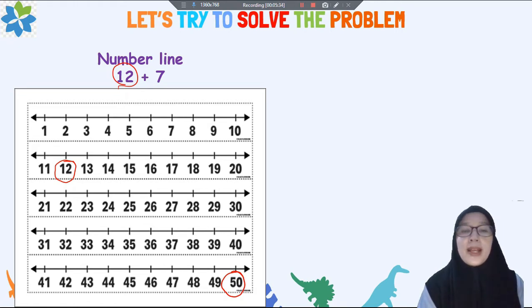Find the 12 here and then after that, plus 7, please count on or go to the right for 7 steps. Artinya silahkan kalian menambahkan atau menunjukkan ke arah kanan sebanyak 7 langkah. Let's go: 1, 2, 3, 4, 5, 6, 7. So we get 19. And then we have gotten the number, the result is 19.